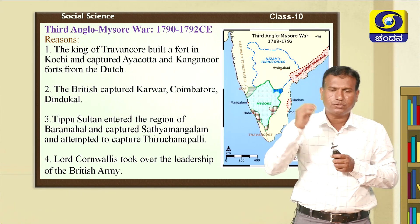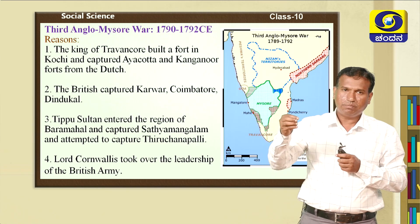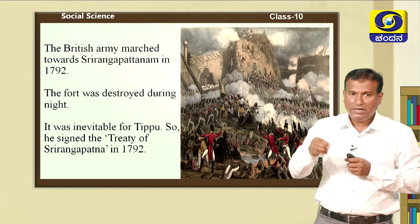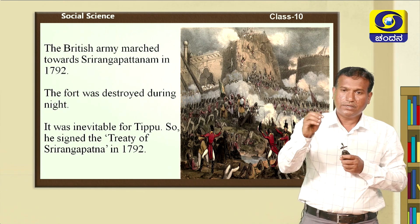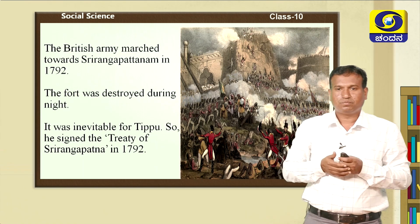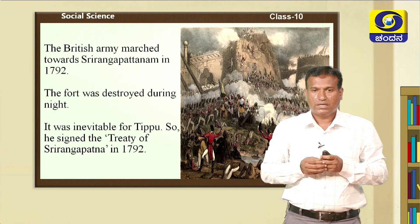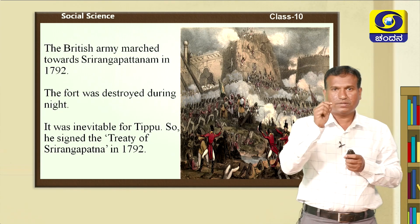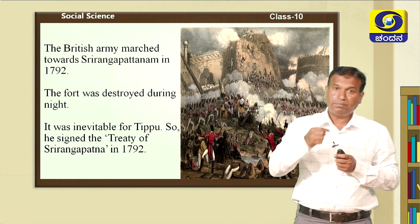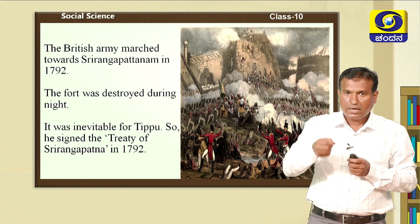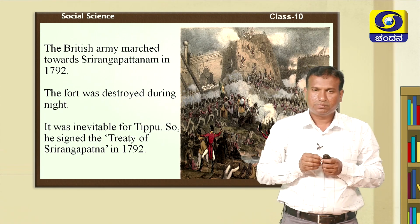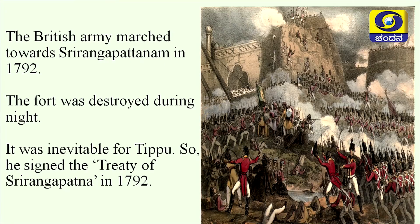During the Third Anglo-Mysore War, the British army came and surrounded Srirangapatna. The British army started to destroy Tipu's fort at Srirangapatna during the night. Realizing the power of the English, Tipu Sultan was helpless and came forward for a peace treaty. Accordingly, in the year 1792, the Treaty of Srirangapatna was signed between Tipu Sultan and the English.